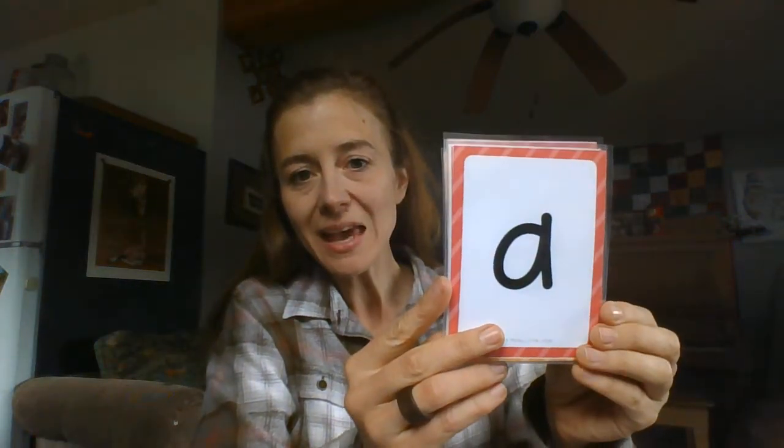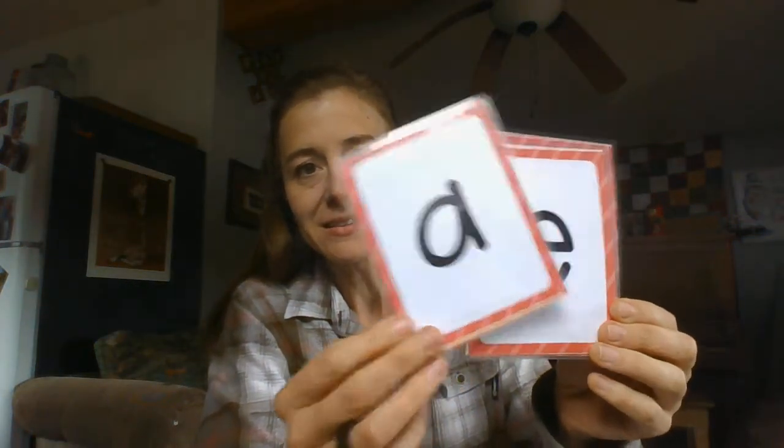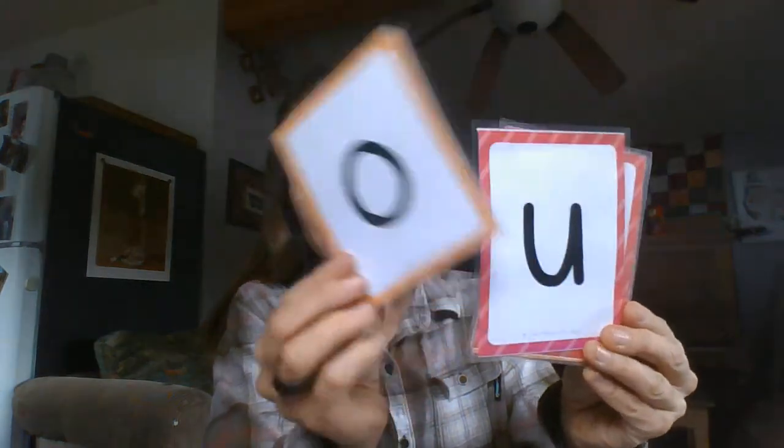Now let's say the sounds that these vowels make. A says ah. E says eh. I says ih. O says ah. U says ah.